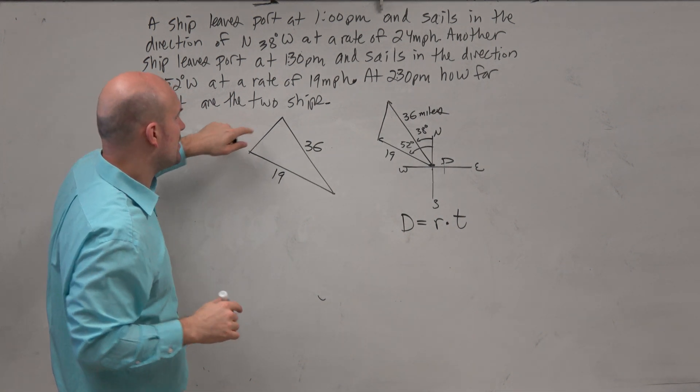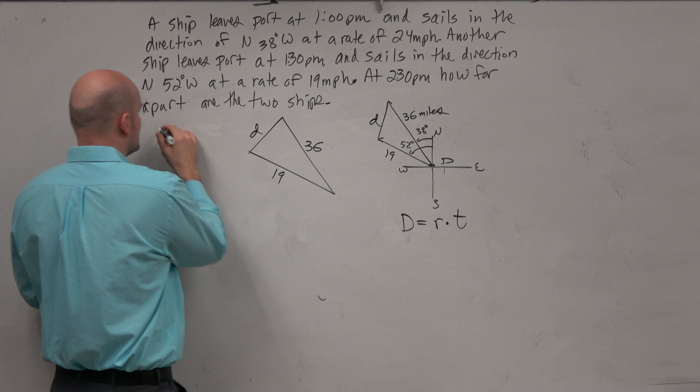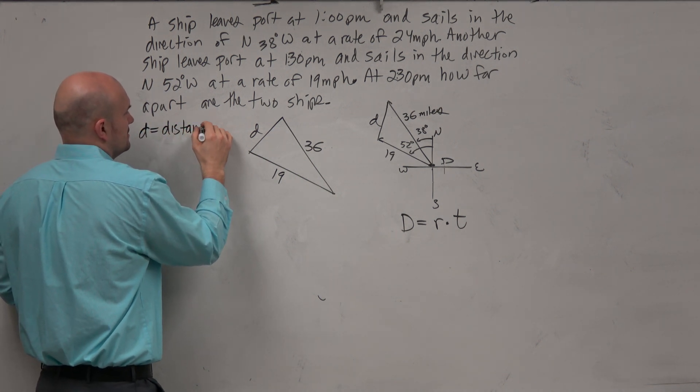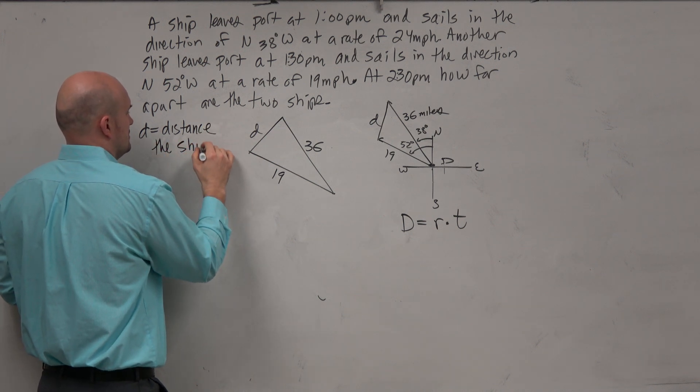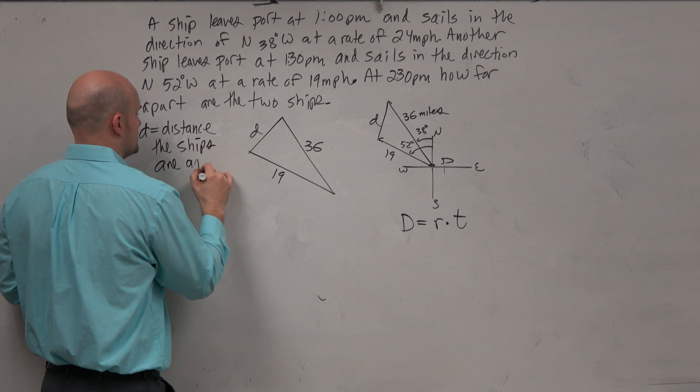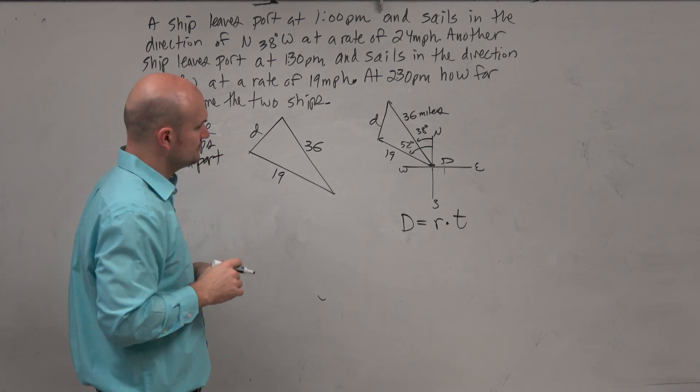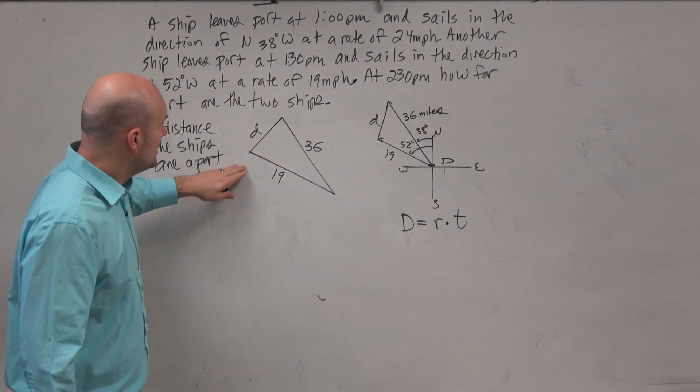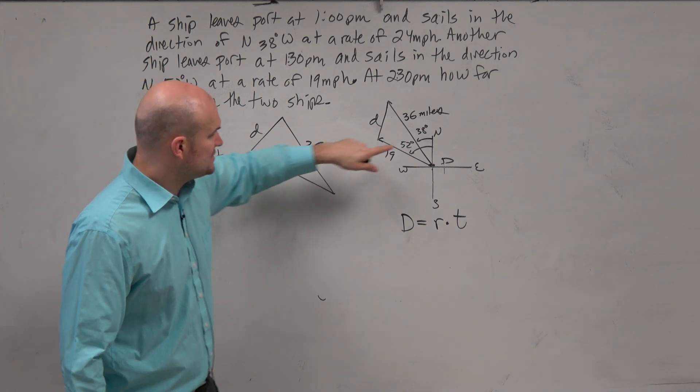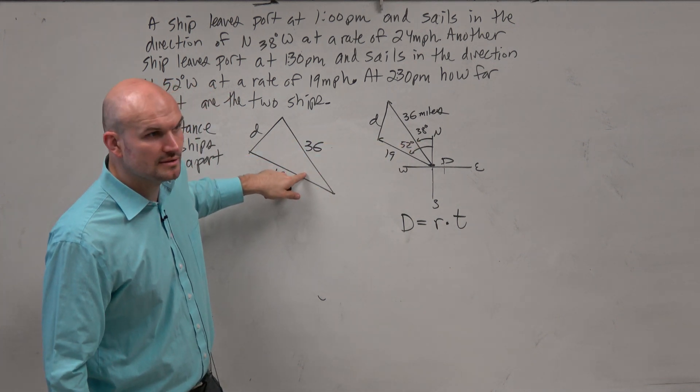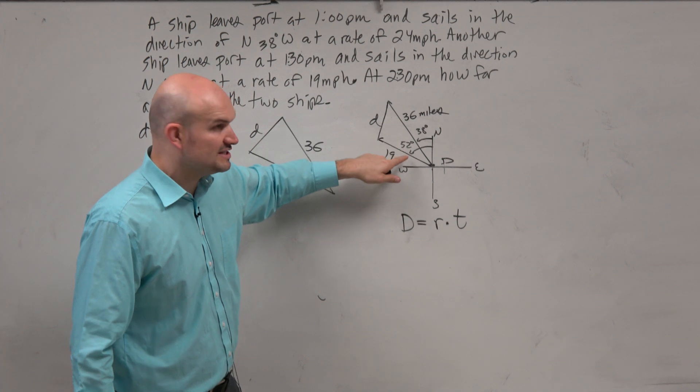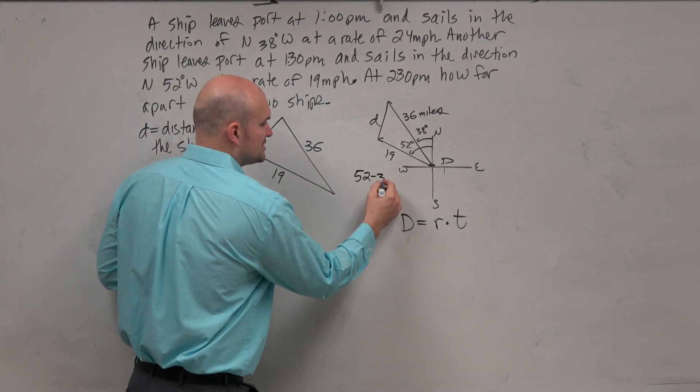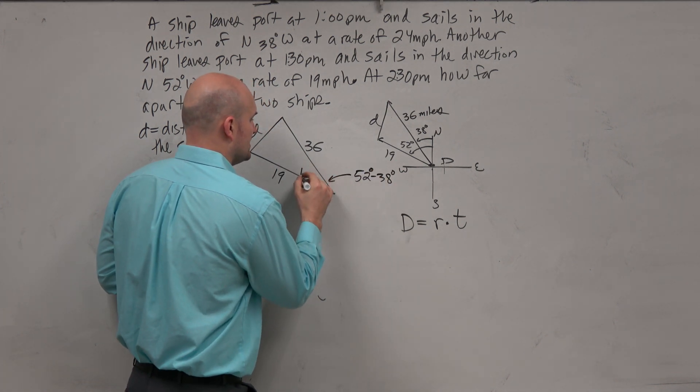Because, again, how far are the ships apart? We're going to call that D. So I'm going to say D equals the distance the ships are apart. Okay? Because otherwise, then I don't have to write a full sentence at the end, right? I already know what D represents. So, all right, so I don't have D, but I have these two angles. Can I figure out what this angle is? Yeah, well, you see, oh, if that's 38 and that's 52, then this angle is just going to be the difference. 52 minus 38 degrees is going to give me 14 degrees.